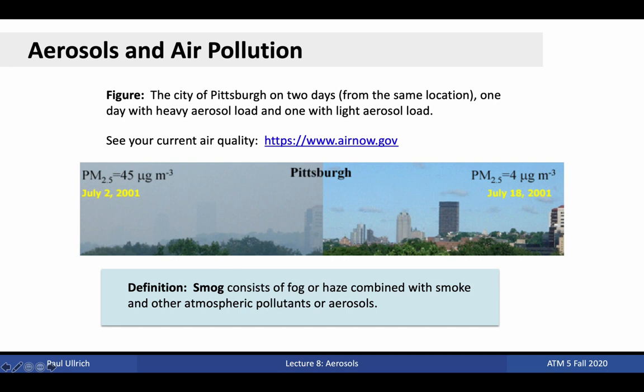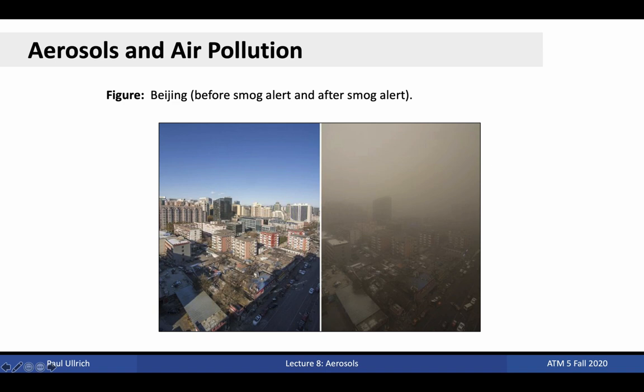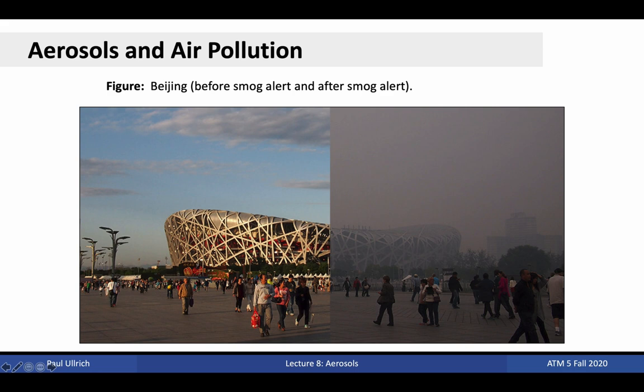Beijing is well known as a global hotspot for poor air quality related to high aerosol concentrations, particularly over the fall and winter. When cold, stagnant air settles beneath warmer air, air is not able to circulate readily into the troposphere and remains near the surface. Consequently, air pollution from the city accumulates and remains trapped near the surface. A smog alert can produce incredibly hazardous air quality, which greatly impacts the health of residents. Here we see the effect of air pollution on Beijing's famous Bird's Nest Stadium, with low aerosol concentrations on the left and higher concentrations on the right.